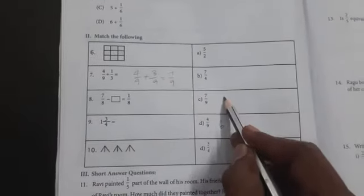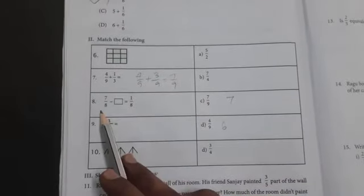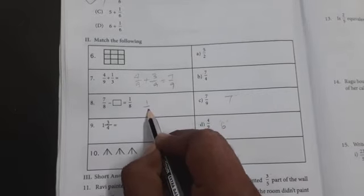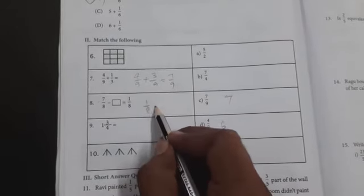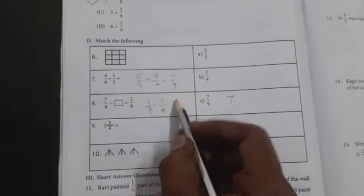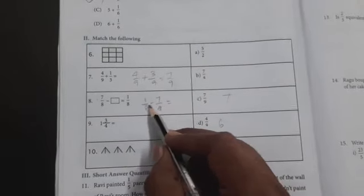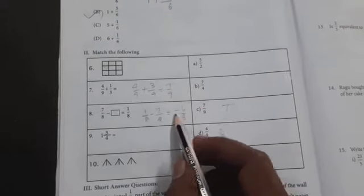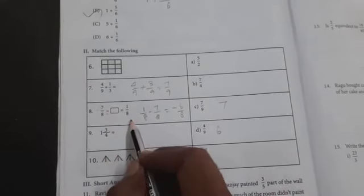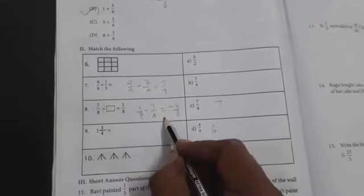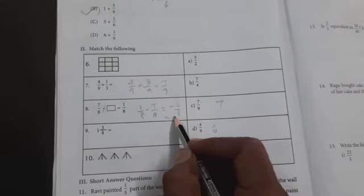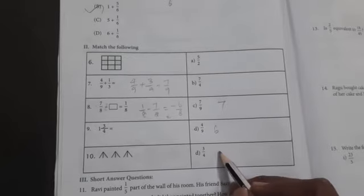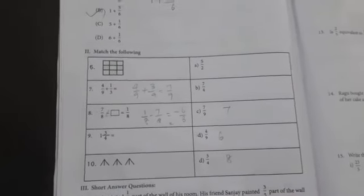Number eight: seven by eight minus box equals one by eight. Transpose, so one by eight minus seven by eight equals minus six by eight. The box equals minus six by eight. After simplification, three by four. Option D, three by four.